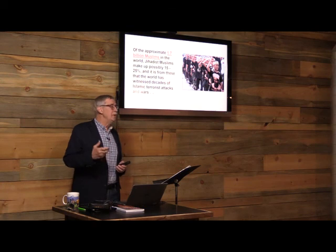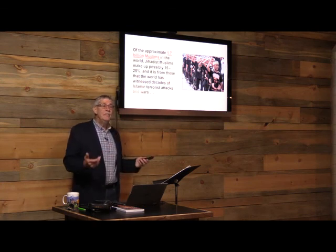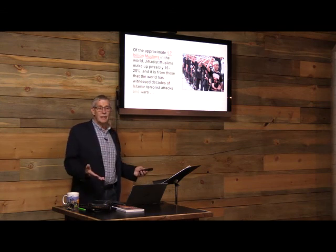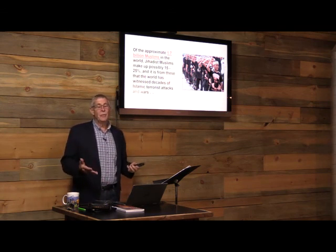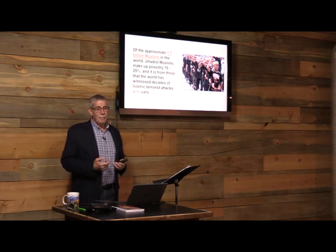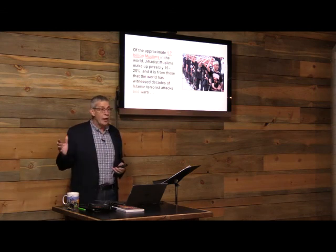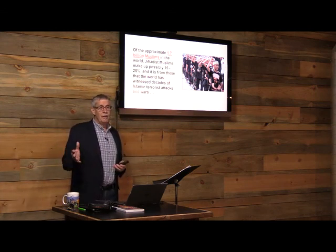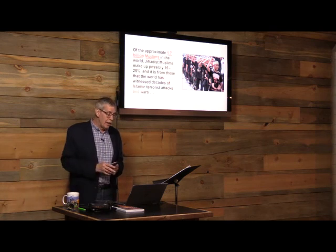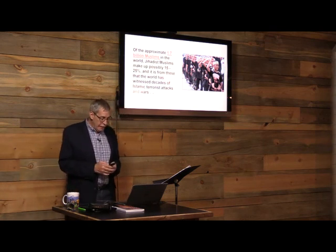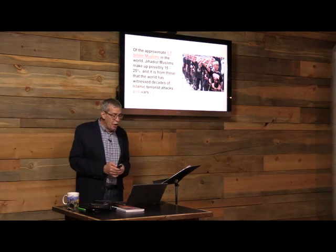When you consider that number of people, most of them are peace loving — they simply want to have families, have jobs, raise their children, do well, and prosper. But when you take 15 to 25% of 1.7 billion, that's a lot of people. Unfortunately, that's a lot of people that want to do harm at times and that are considered jihadist Muslims. These statistics — of 15 to 25% — are from people like the CIA and others. There are people who try to debate that, but when you look country by country at what they do, it would appear there are that many.